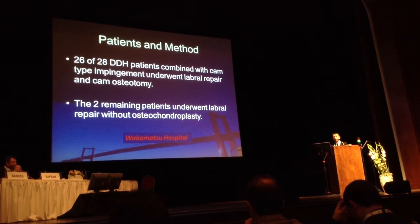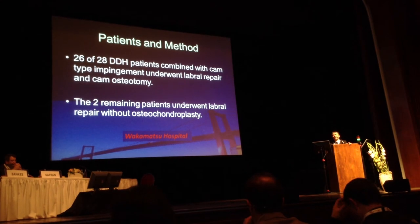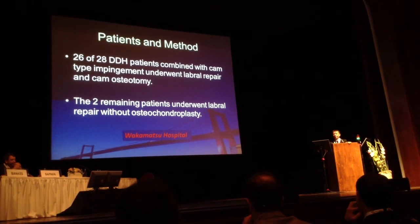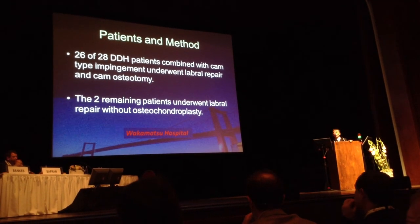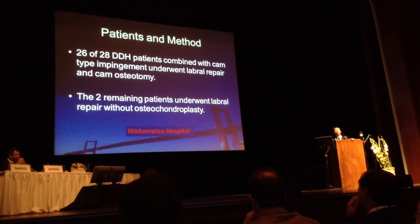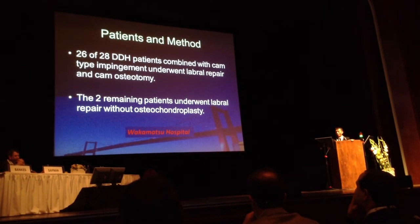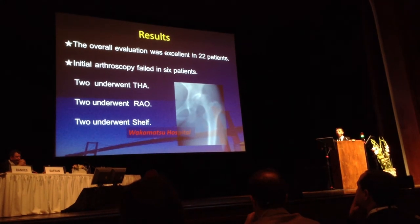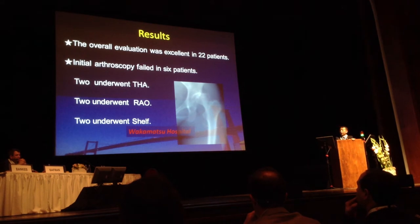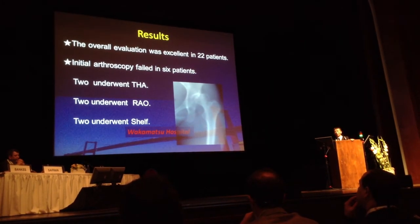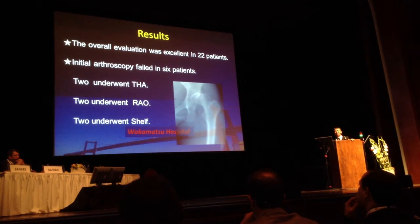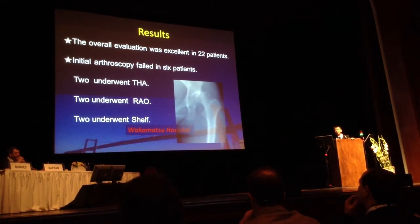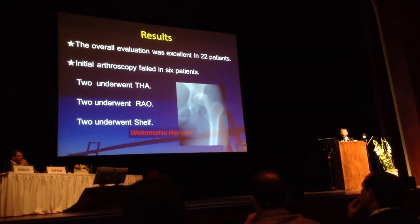Twenty-six of 28 patients with combined cam-type impingement underwent labral repair and cam osteoplasties. The two remaining patients underwent labral repair without cam osteoplasties. Overall evaluation was excellent in 22 patients; however, initial arthroscopy failed in 6 patients — two underwent THA, two required RAO, and two required acetabuloplasties.